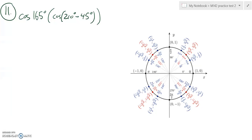We have practice test number two for Math 142. We're going to find the exact value of cosine of 165 degrees. It tells us how to break it up. We're going to use subtraction with that cosine.